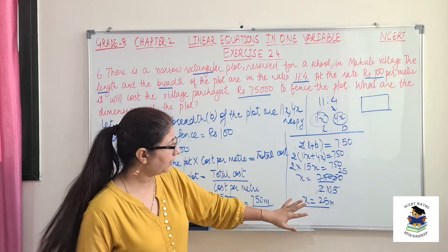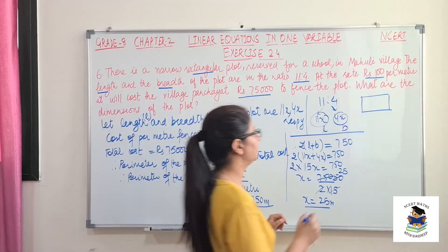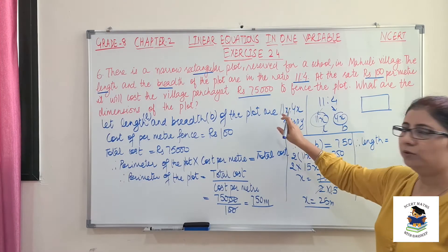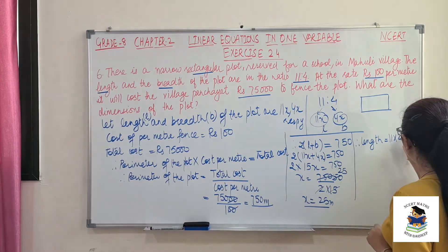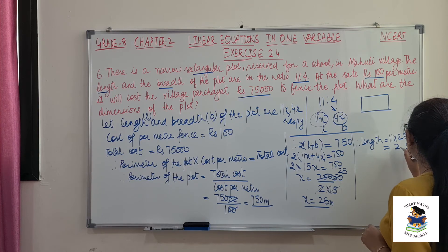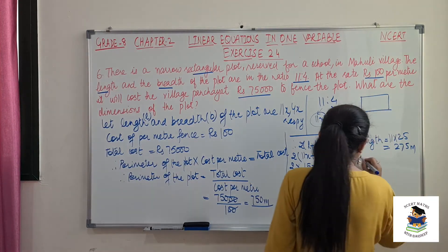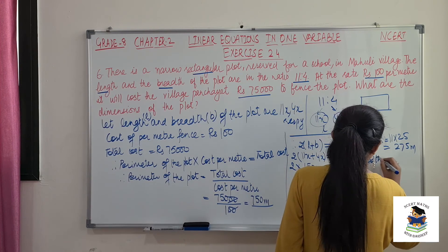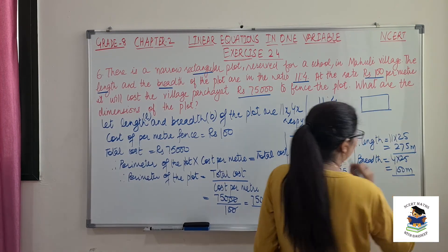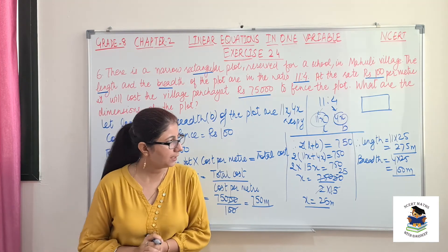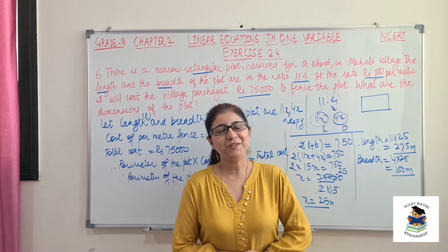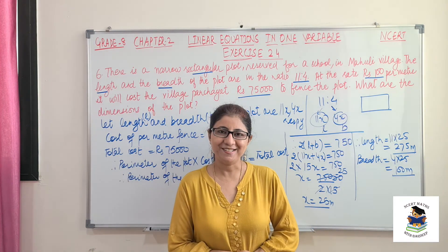Now we have x, so we can find length and width. Length equals 11x, that is 11 into 25, which is 275 meters. Width equals 4x, that is 4 into 25, which is 100 meters. So length and width are 275 meters and 100 meters respectively. This is question number 6 and all for this video. See you in the next video with the remaining questions of this exercise. Thank you.